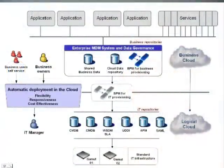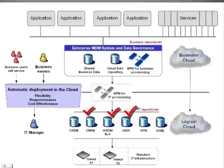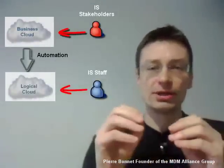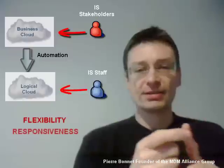From the business cloud level, an automatic process is established to push the right data to IT repositories at the level of the logical cloud. To guarantee the quality of this process, a BPM for IT provisioning is used. A set of IT connectors are used to feed and update automatically CMDB, WSDM repository, UDDI, and other IT repositories. Thanks to this automation from business cloud to logical cloud, key business properties are enforced such as flexibility, responsiveness, and cost effectiveness.